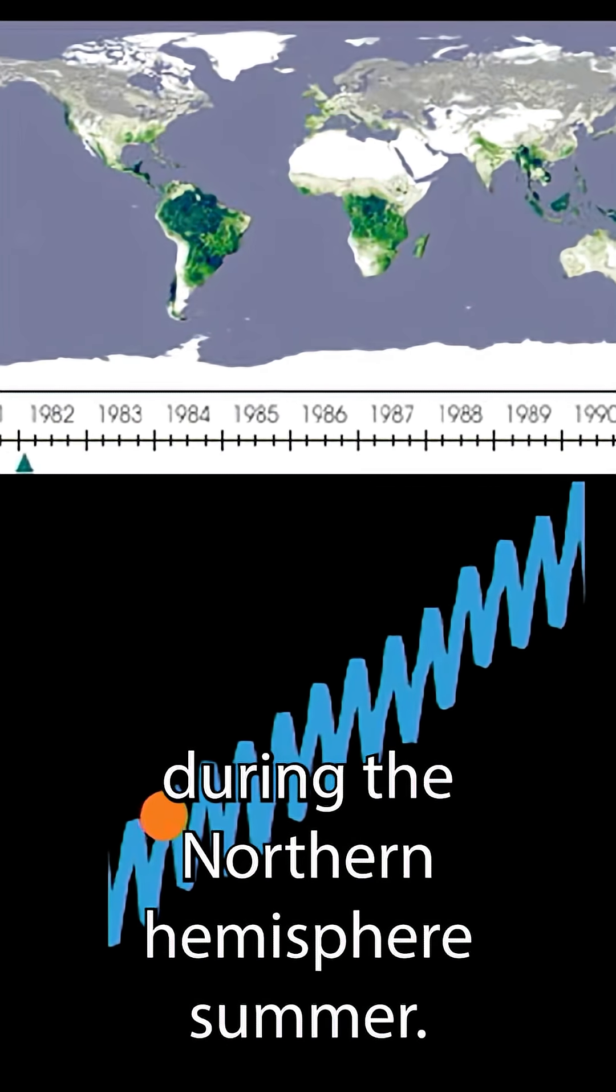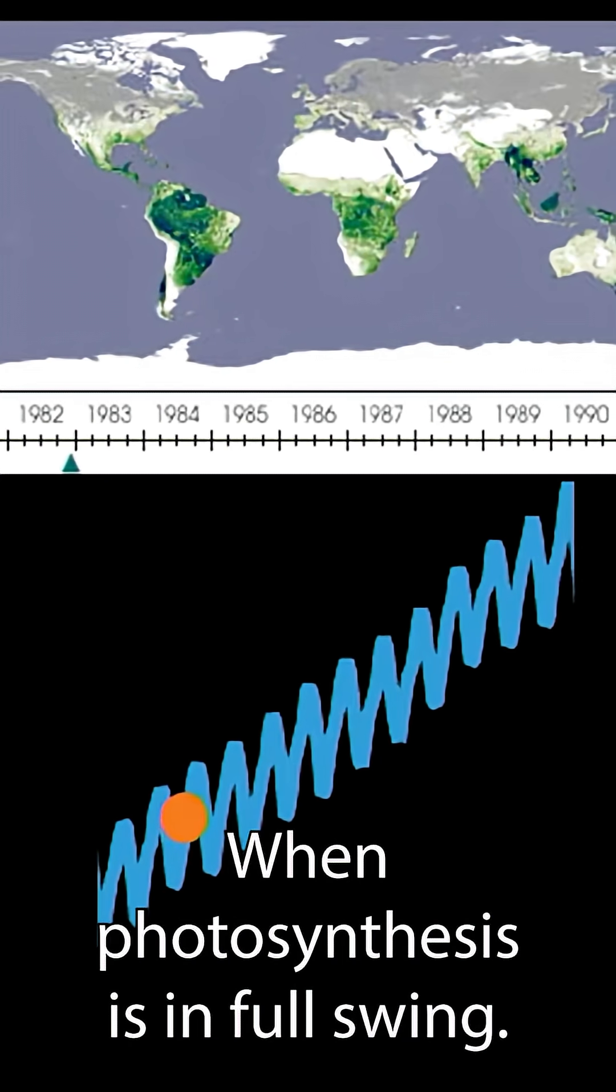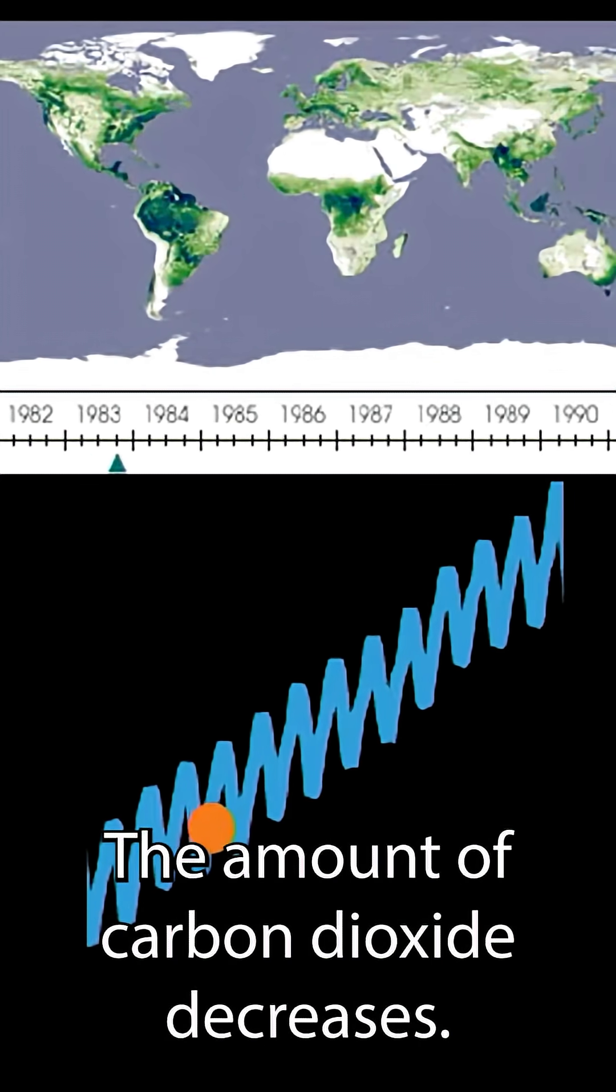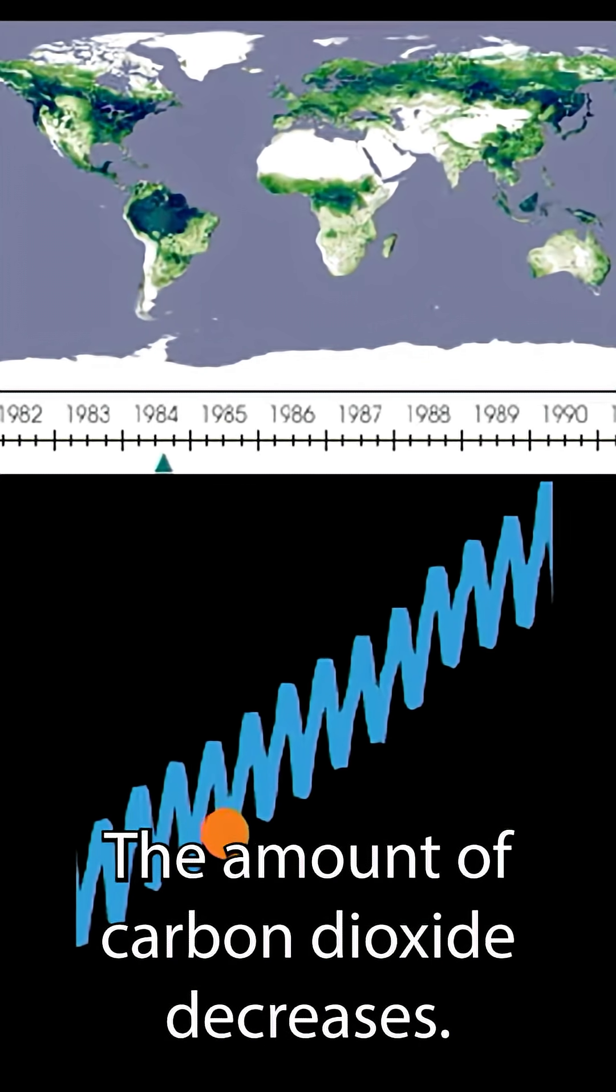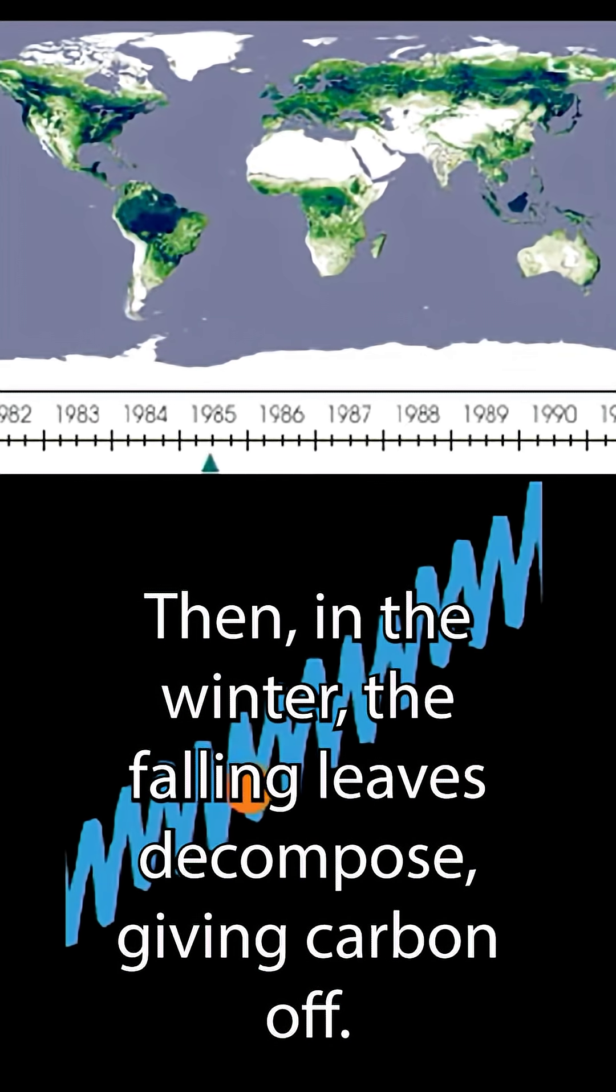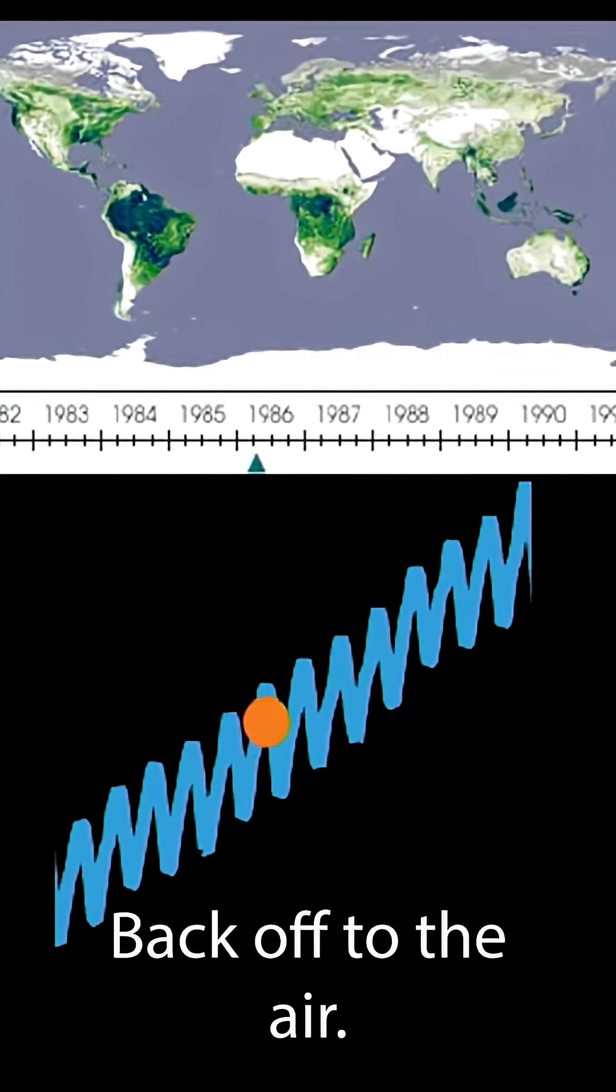During the Northern Hemisphere summer, when photosynthesis is in full swing, the amount of carbon dioxide decreases. Then in the winter, the falling leaves decompose, giving carbon off back to the air.